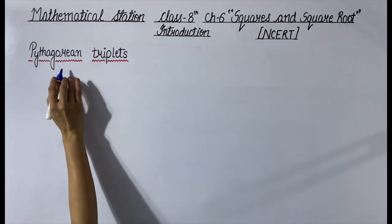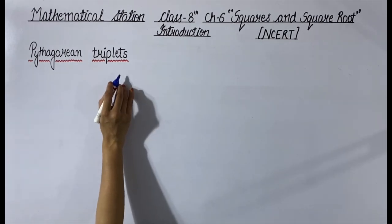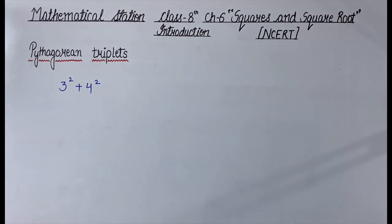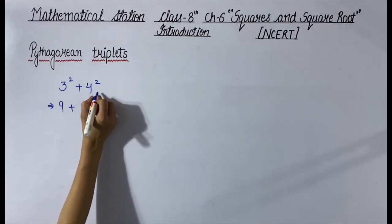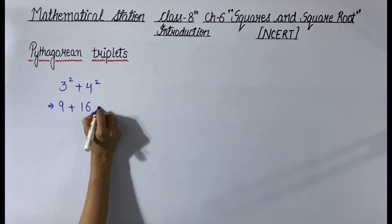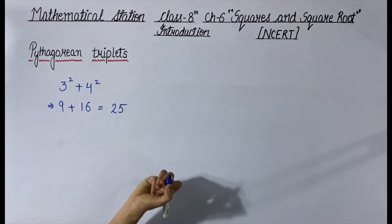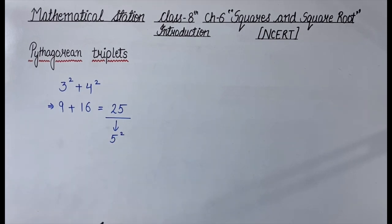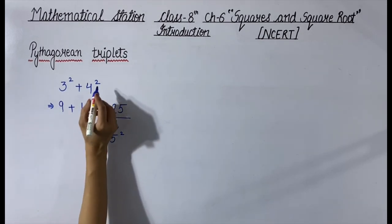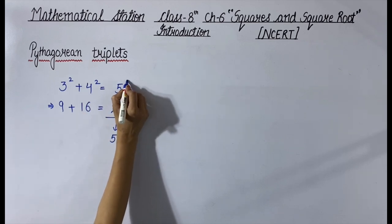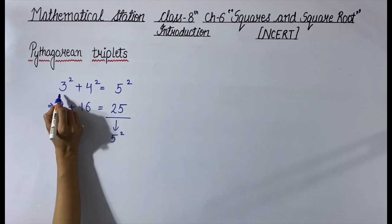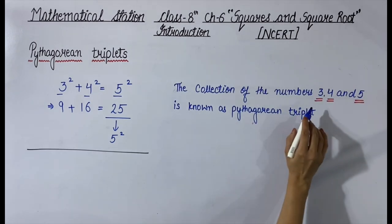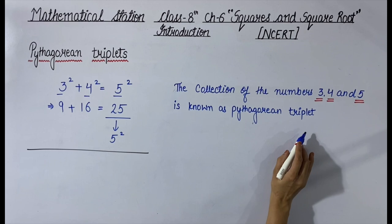Our next topic is Pythagorean triplets. Let's understand what a Pythagorean triplet is. Suppose we have 3² + 4²: 3² = 9, 4² = 16, and 9 + 16 = 25. We know that 25 is the square of 5. So we can say 3² + 4² = 5². The numbers 3, 4, and 5 form a Pythagorean triplet.